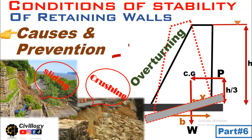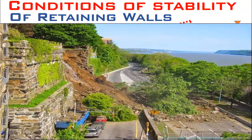Hello guys, welcome to my channel. This video is about failure of retaining walls, their causes and preventive measures. We will learn the conditions of stability of retaining walls — what conditions are required to prevent the walls from failure. The protective measures could be against overturning, sliding or collapse, crushing, and against tensile stresses. Retaining walls are made to retain either soil or water.